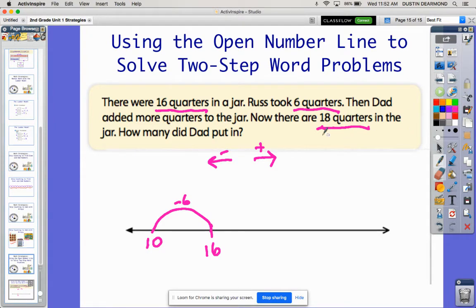Let's trade colors here because then Dad added some more quarters. So his dad threw in some more. So because we're adding more to the jar, we know we have to jump to the right. We don't know how many he put. That's what we're trying to find out.